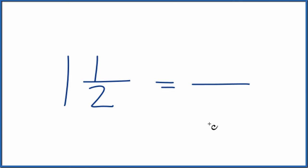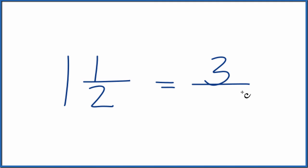Here's how we do it. For 1 and 1 half, we'll take the 1 — that's the whole number — multiply it by 2, the denominator, and then add the numerator. So 1 times 2 is 2, plus 1, that gives us 3, and we just bring the denominator over, and we have our improper fraction.